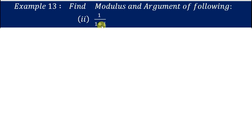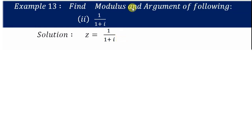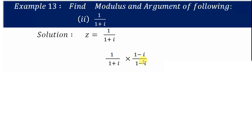Next, 1/(1+i). We need to convert this into standard form to find the modulus and argument. To convert into standard form we rationalize the denominator. For 1/(1+i), the conjugate of the denominator is (1-i), so we divide and multiply by (1-i).